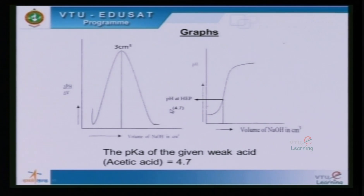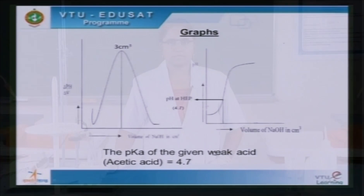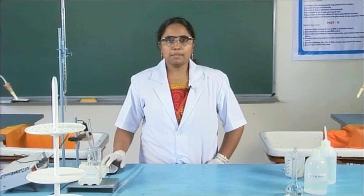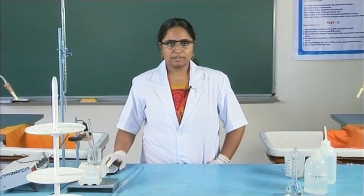It was found from the graph that the pKa of the given weak acid — acetic acid — is 4.7.